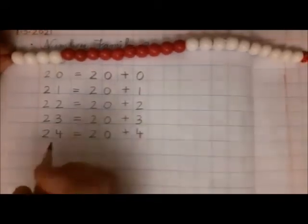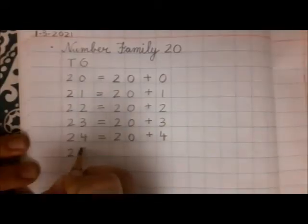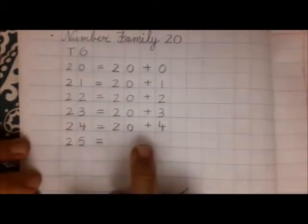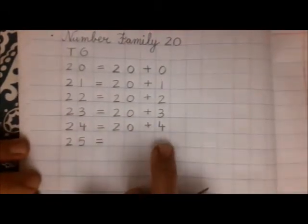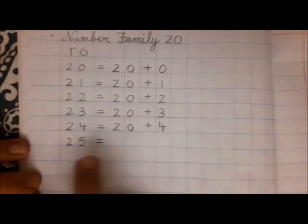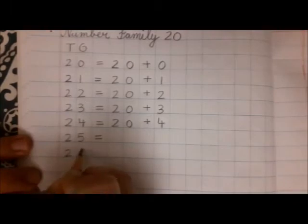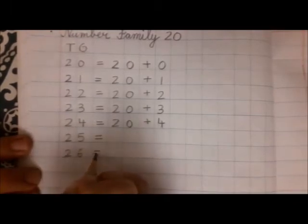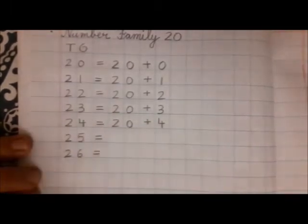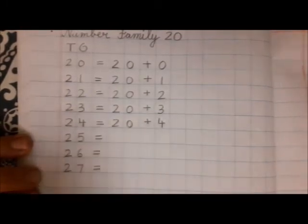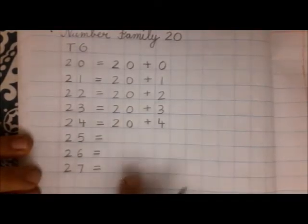Now next is number 25. So 25 is two tens and how many ones? Five ones. Twenty-six: two tens and six extra. Twenty-seven: two tens and seven ones.